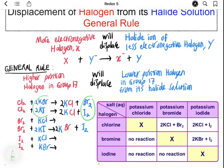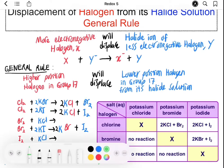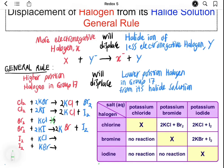Chlorine can displace both bromine and iodine from their halide solutions because chlorine is more electronegative than both bromine and iodine. Bromine is unable to displace chlorine from potassium chloride solution because bromine is less electronegative than chlorine. However, bromine can displace iodine. Iodine cannot displace both chlorine and bromine from their halide solutions. These reactions are also summarized in the table.